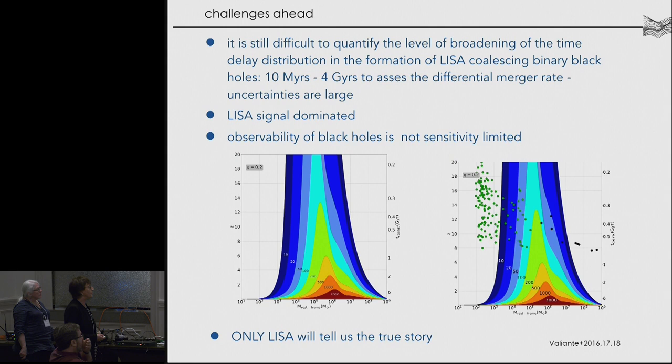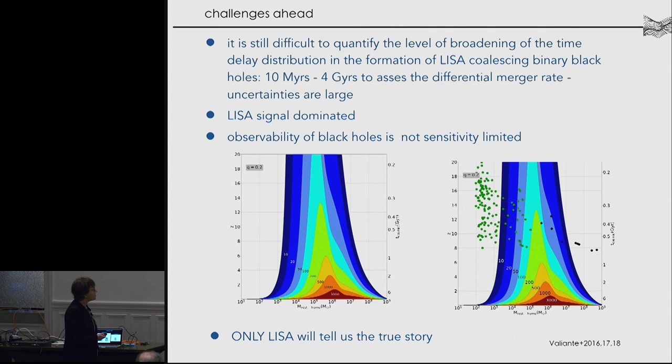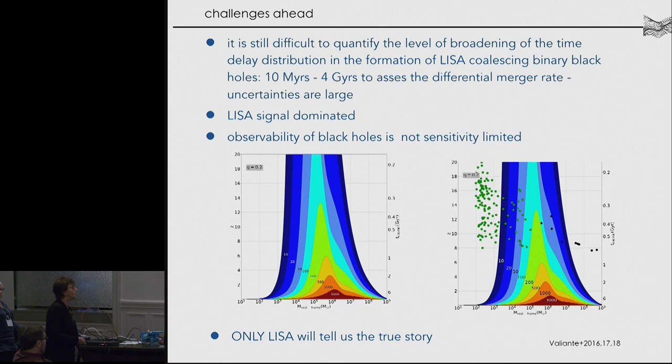Let me remind you that ELISA will be an observatory which is signal-dominated; the observability of black holes out to very large redshift is not sensitivity-limited. These little dots derived from a semi-analytical model by Vaillant et al. show how fast stellar-origin black hole seeds or heavy seeds drift at high redshift, and we would really like to catch these coalescences — which is a genuine challenge from a cosmological perspective.